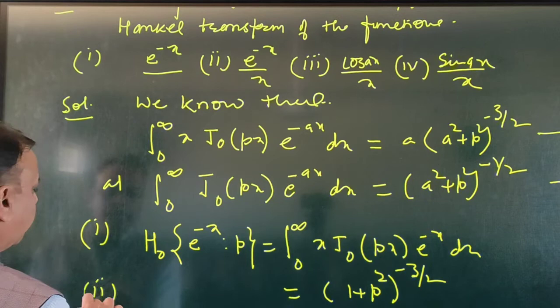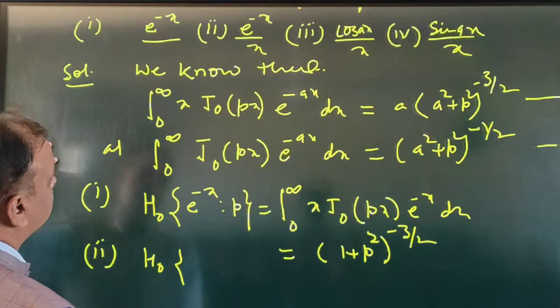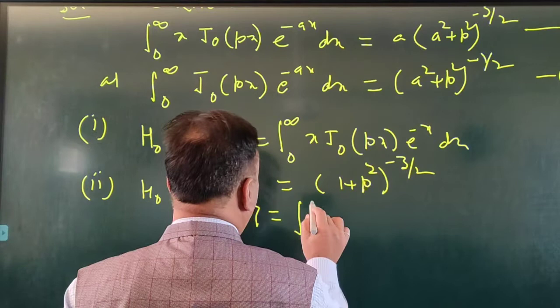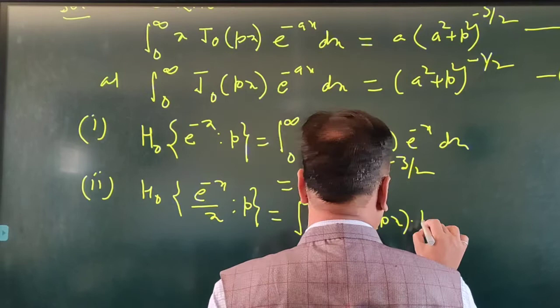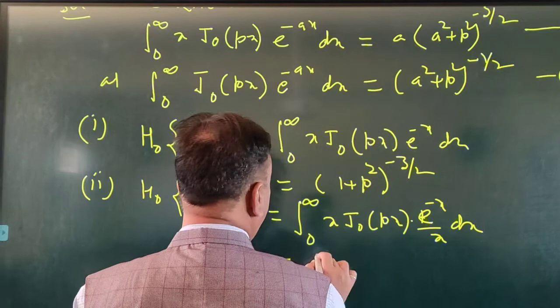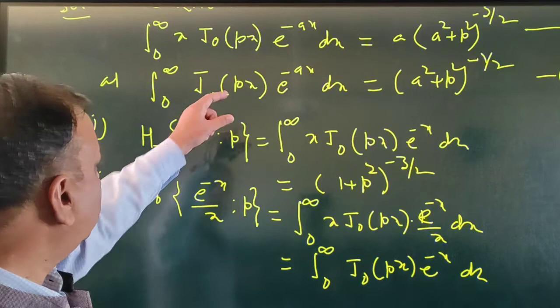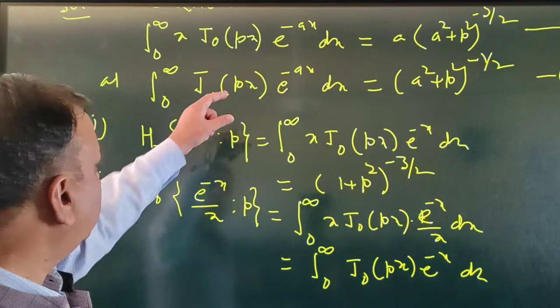The second result: the Hankel transform of e^(−x)/x with respect to parameter p equals, by definition, the integral from 0 to infinity of x · J₀(px) · (e^(−x)/x) dx. This simplifies to the integral from 0 to infinity of J₀(px) · e^(−x) dx, where x cancels. Using the second integral with a = 1, we get (1 + p²)^(−1/2).